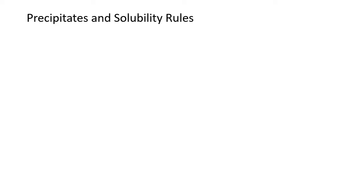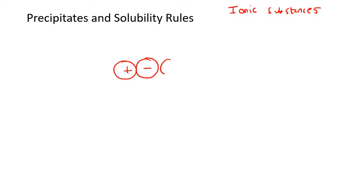What we're going to quickly talk about is solubility, which is something we've looked at in previous lessons. This chapter is all about ionic substances. Ionic substances have positive things called cations connected to negative things called anions, and they form one big crystal lattice.